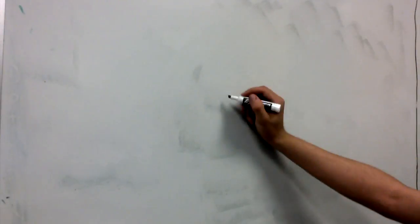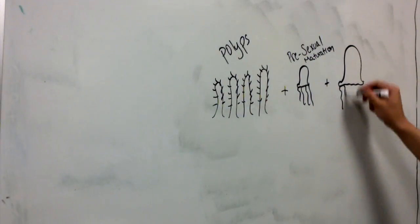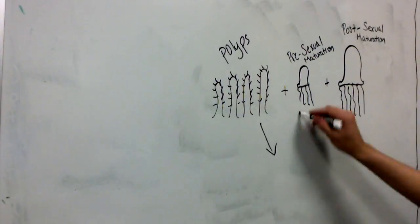In the lab, they took polyps, pre-sexually mature and post-sexually mature jellyfish to account for different lifetime points and ran experiments on them.